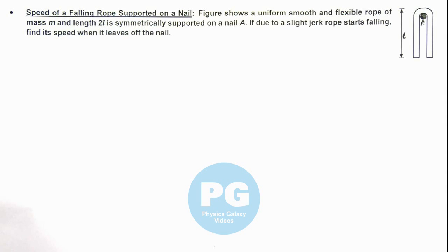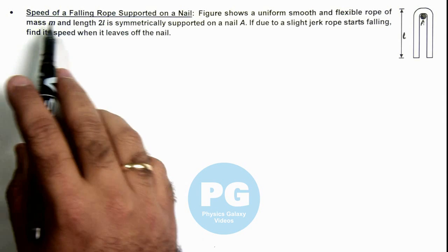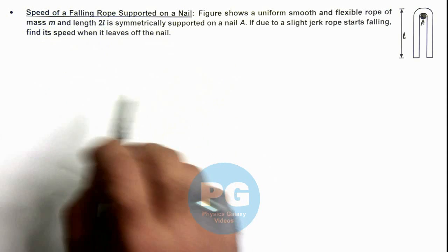In this illustration, we are going to calculate the speed of a falling rope supported by a nail.